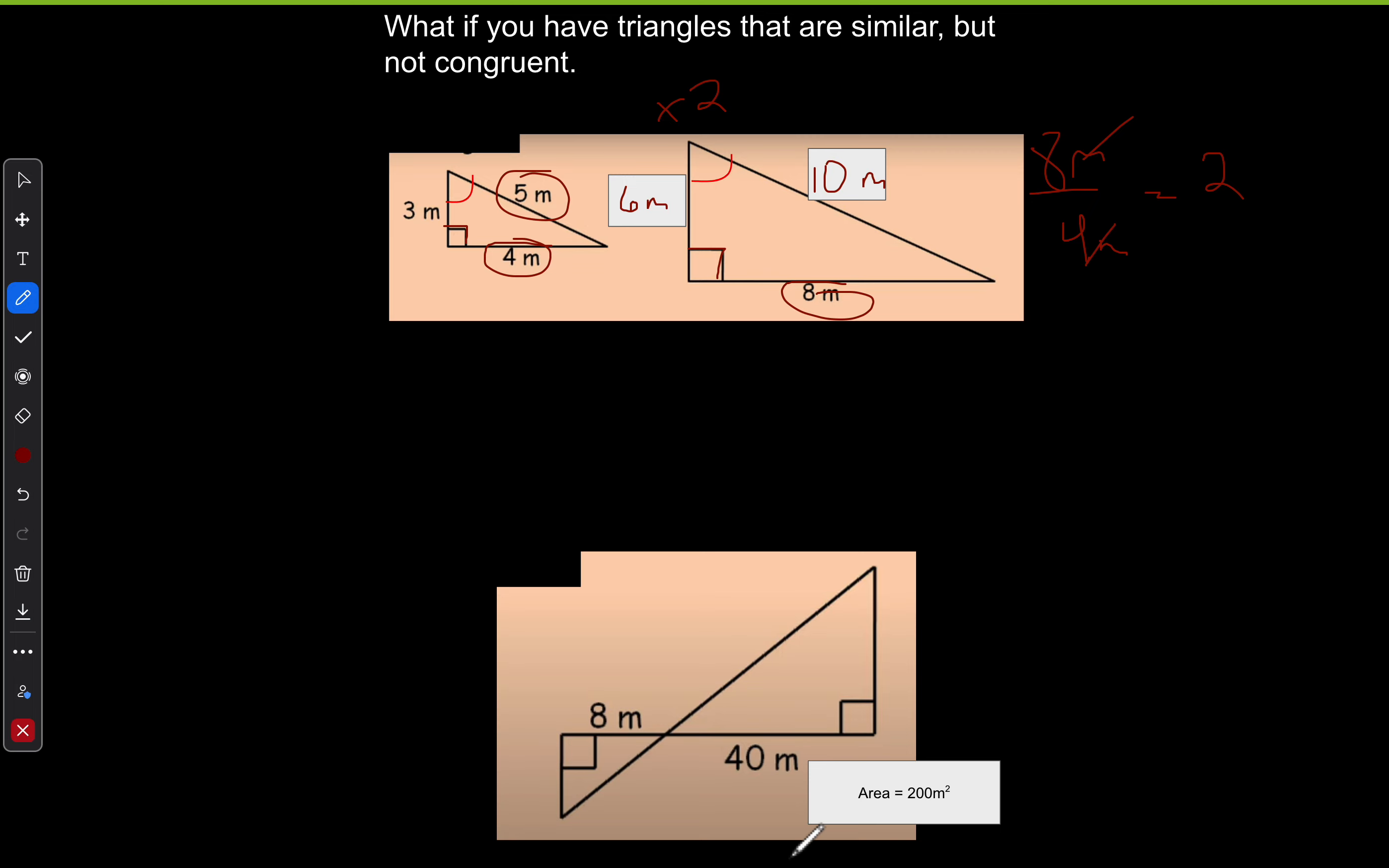But what if I'm given the area and not anything else except for one length? So the formula for area, remember, is area equals the base, which is 40 on the bigger one, times the height and then divided by two.